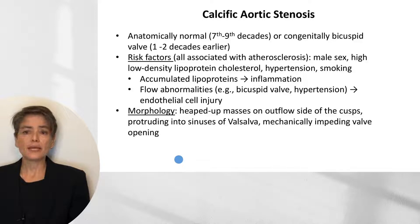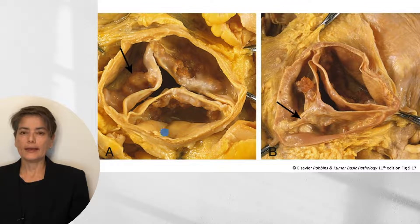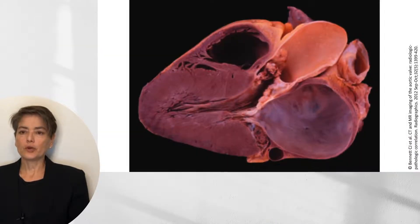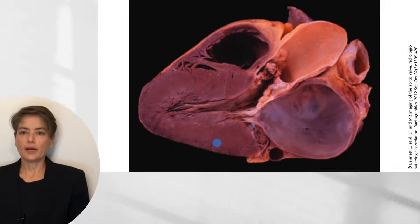Morphologically, we see heaped-up masses of calcium on the outflow side of the cusps that can protrude into the sinuses of Valsalva and mechanically impede valve opening. Two examples are shown: one in a healthy tricuspid aortic valve with mounds of calcification, and one in a congenitally bicuspid aortic valve showing the fusion and a mound of calcium. This results in that pressure gradient, left ventricular concentric hypertrophy, and dilation of the left atrium.